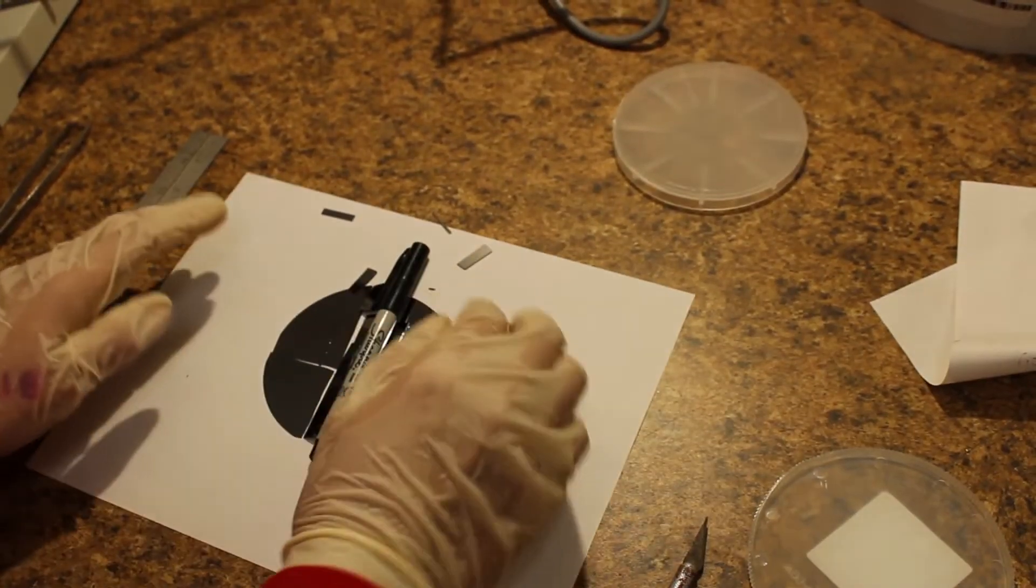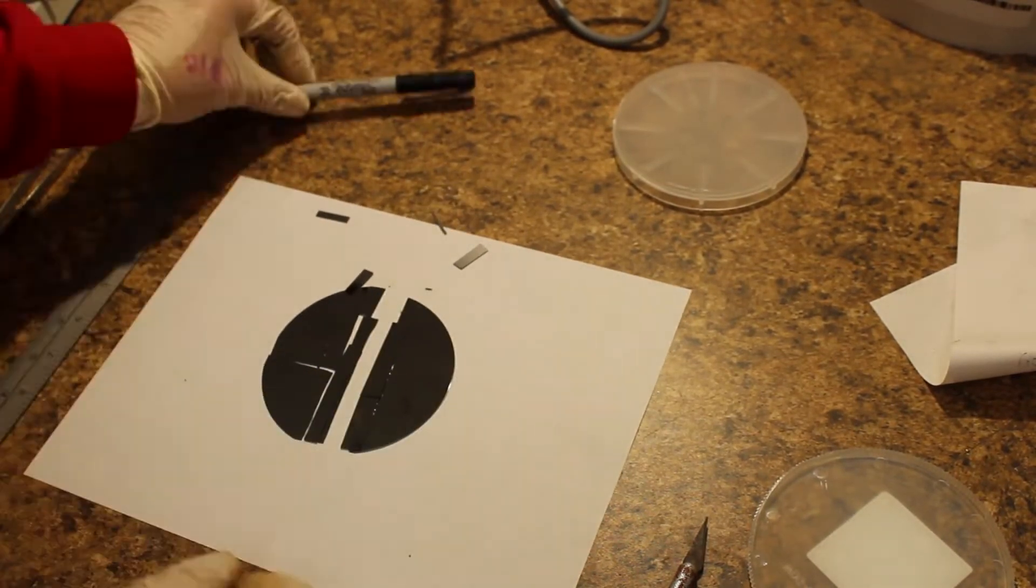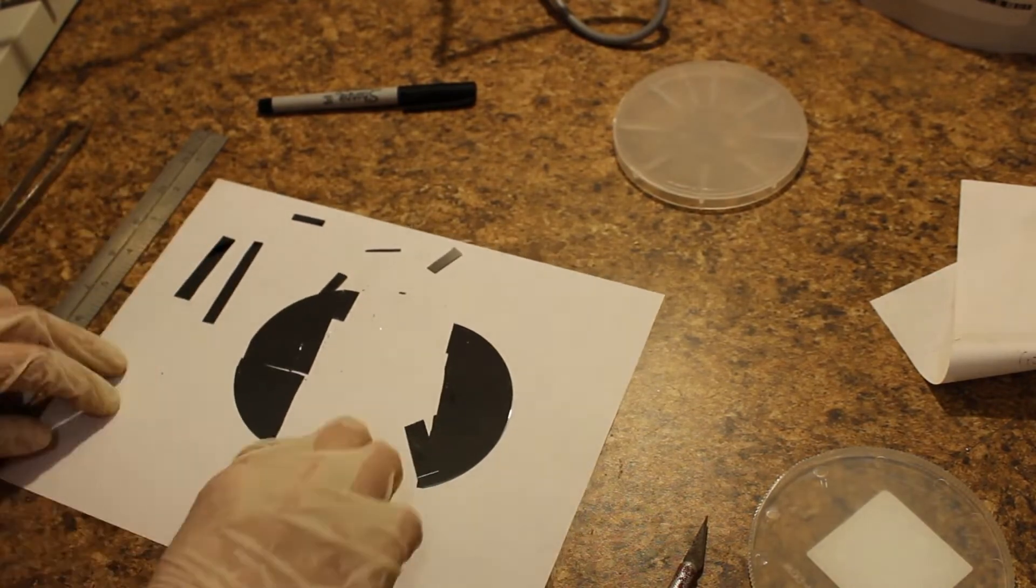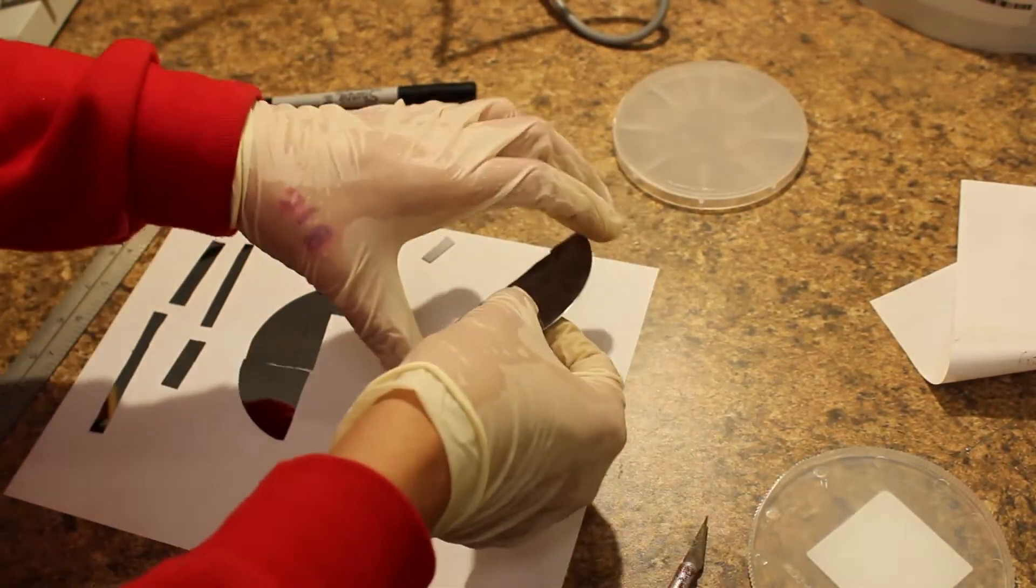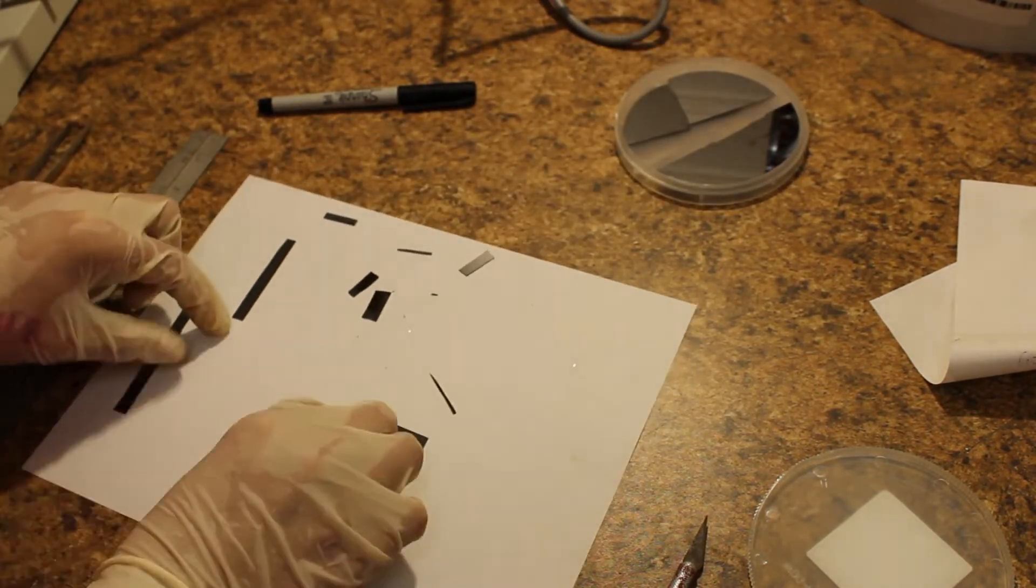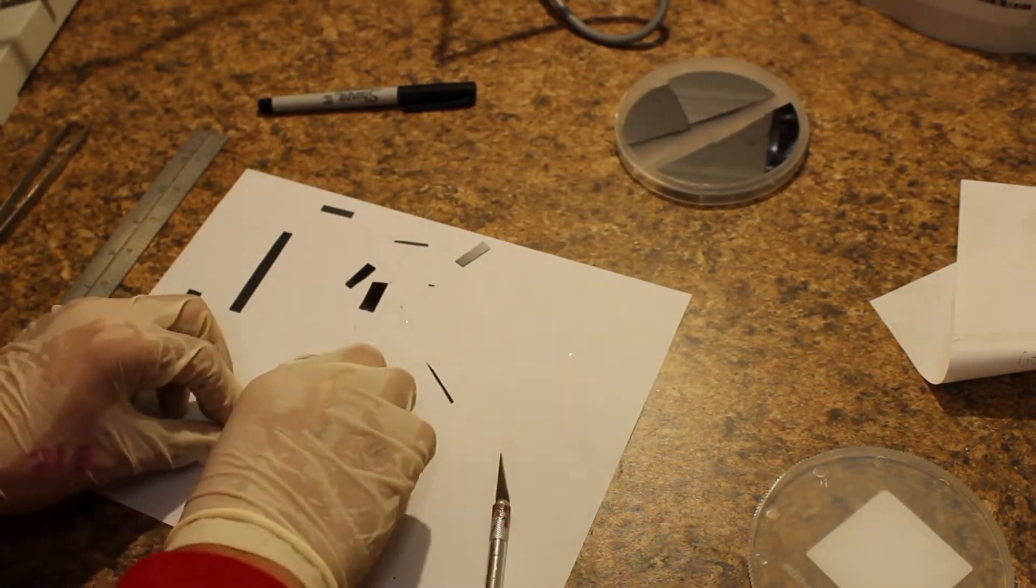I broke the wafer perpendicular to the flat. This is important because it allows us to break across the lattice lines. This gives us a very clean break through the wafer due to the wafer being one large crystal of silicon. Afterwards I break my pieces into smaller rectangles that are perfect for our next step.